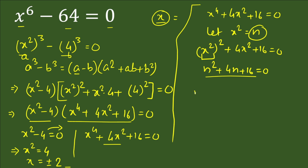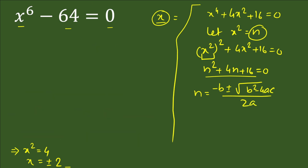We apply the quadratic formula: n equals (minus b ± √(b² minus 4ac)) divided by 2a. Here a = 1, b = 4, and c = 16.